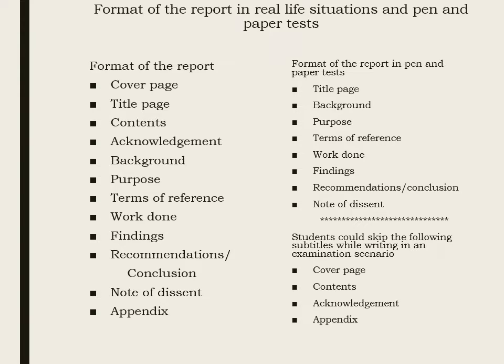The acknowledgement section is where the report writer thanks the people and agencies that helped in preparing the report. Background sets the overall scenario of the event or project, and purpose states the direct objective of the report. Terms of reference includes details of the people who asked to prepare the report and the people who prepared it, as well as the date of submission. Work done explains the methodology of getting the information. Findings cover whatever things are found based on the work done, followed by final recommendations and conclusion.